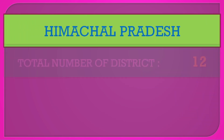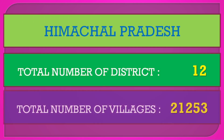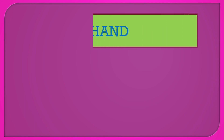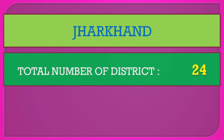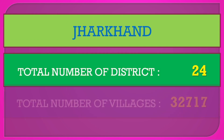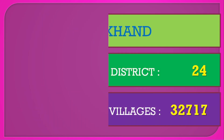Himachal Pradesh: total number of districts 12, total number of villages 21,253. Jharkhand: total number of districts 24, total number of villages 32,717.